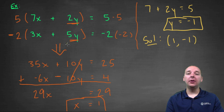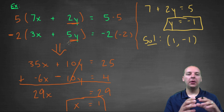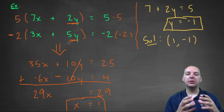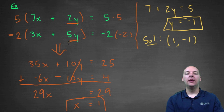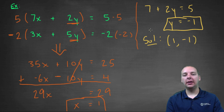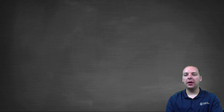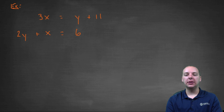Hopefully you're getting a better feel for the addition method: put the equations in standard form, multiply one or both equations by particular numbers to make the coefficients for either x or y line up, then add to eliminate that variable, solve for one variable, and use that answer to find the other. We're going to start one more example but not completely finish it.